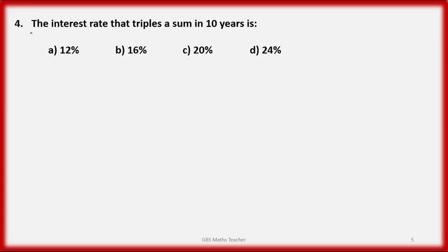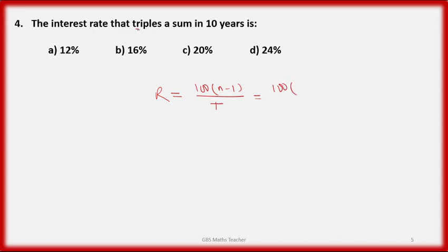Next question: the interest rate at which a sum triples in 10 years — options are 12%, 16%, 20%, and 24%. Using the same formula r = 100 × (n − 1) / t: n = 3 (triples), t = 10, so 100 × (3 − 1) / 10 = 20 percent. This is the answer.